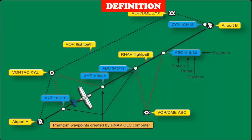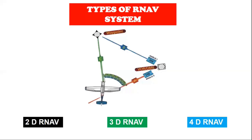Area navigation is a navigation system which permits aircraft operation on any desired flight path within the coverage of station reference navigation aids, or within the limits of the capability of self-contained aids, or a combination of these. RNAV comes in various types: 2D, 3D, and 4D, each enhancing navigation capabilities in different ways. A 2D system provides navigation in the horizontal plane. A 3D system adds guidance capability in the vertical plane. A 4D system provides navigation in the horizontal plane, guidance in the vertical plane, and a timing function.